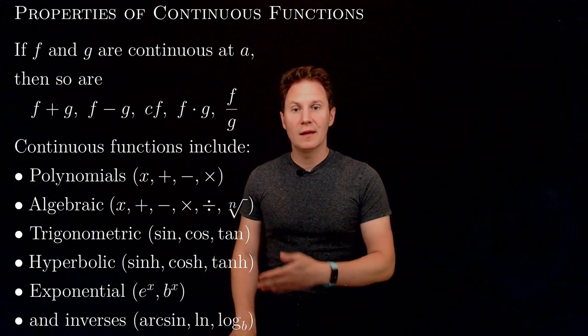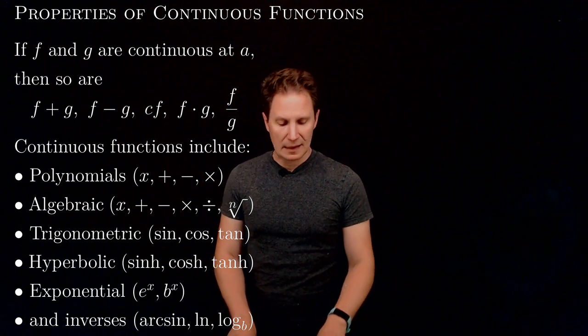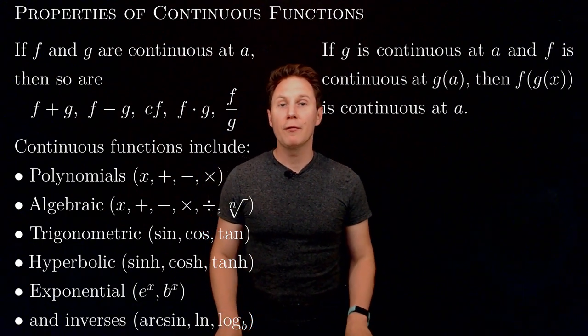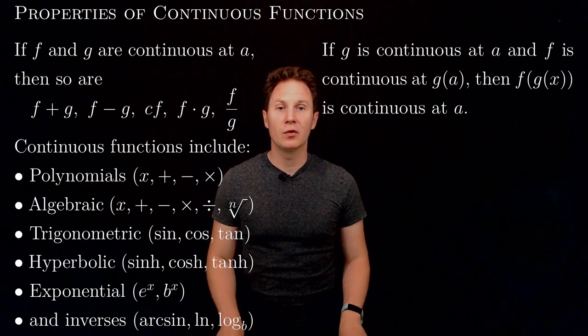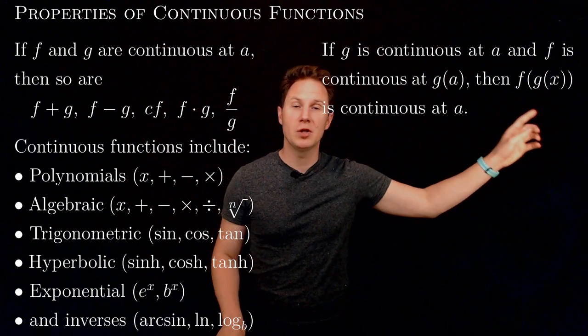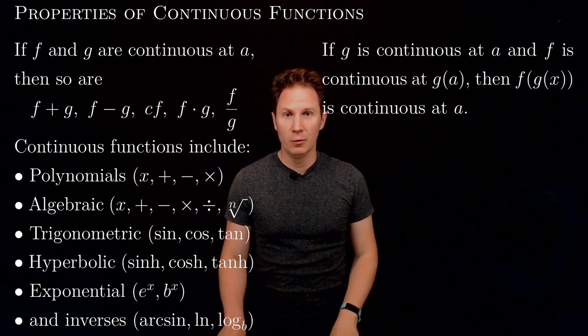But we can create even more continuous functions out of these by combining these, taking their composition. This is guaranteed by this result. So if we have a function g that is continuous at the point a and another function f that is continuous at g of a, then their composition, f of g of x, which is a function in x, is continuous at the point x equals a.